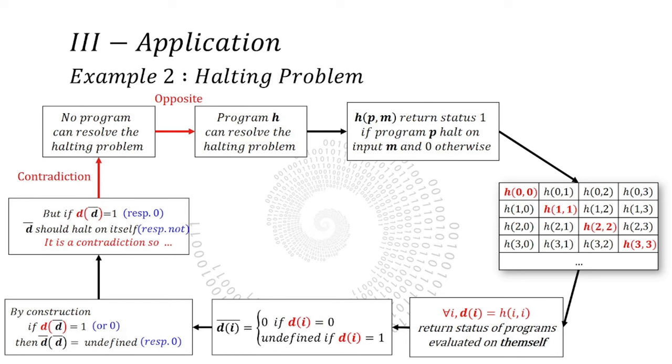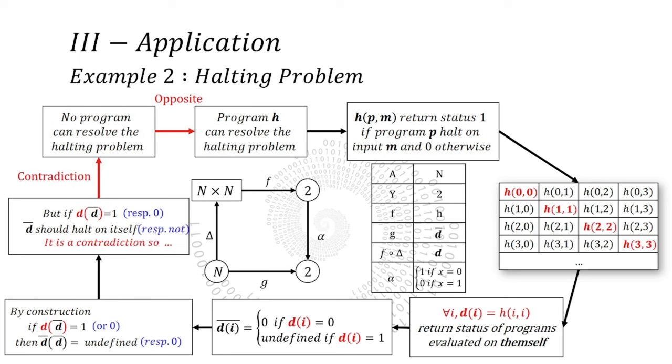Now, for the halting problem, it is slightly different because instead of decimal sequences, we worked with binary sequences. So, A is still related to the natural numbers because we admitted that programs were countable. Y is the set 2 which contains 0 and 1, the two states that the program can return, halt or not halt. F is associated with our special program H, G to counter-D, D is a composition of F and delta, alpha is some sort of negation operation on binary digit, which has no fixed point.